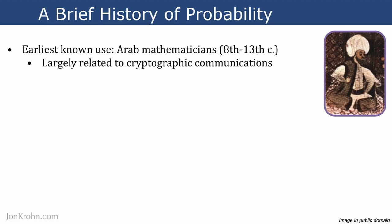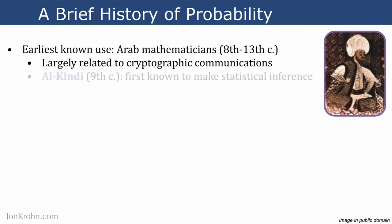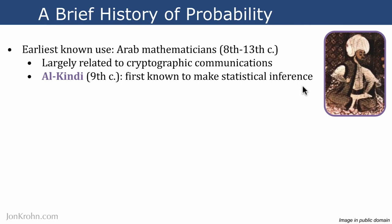Al-Kindi is a particular Arab mathematician who is painted here, and he is the first person known to make a statistical inference using probability theory.